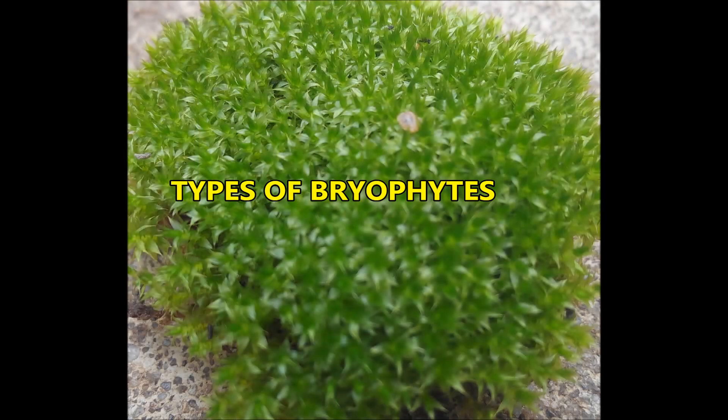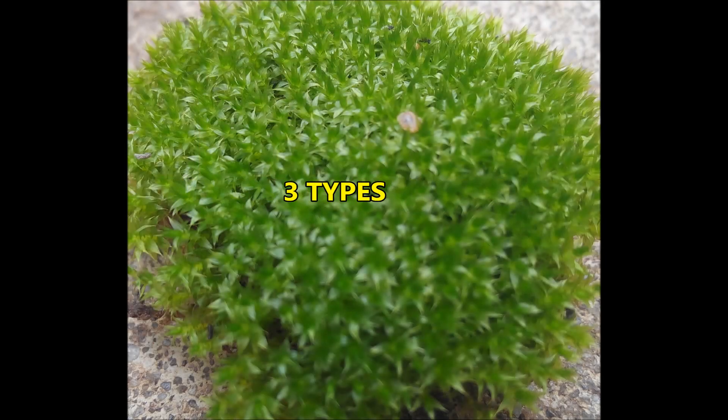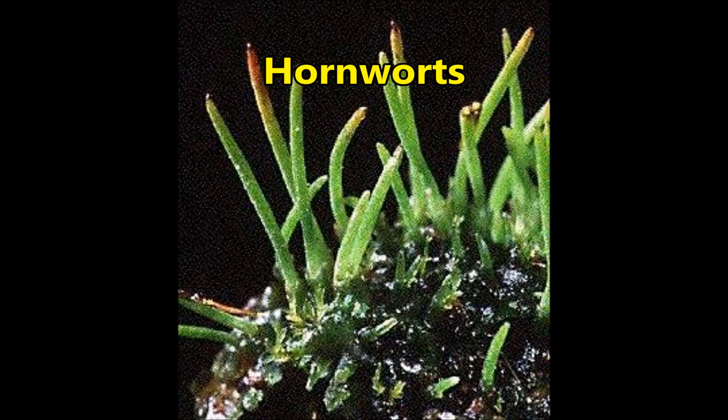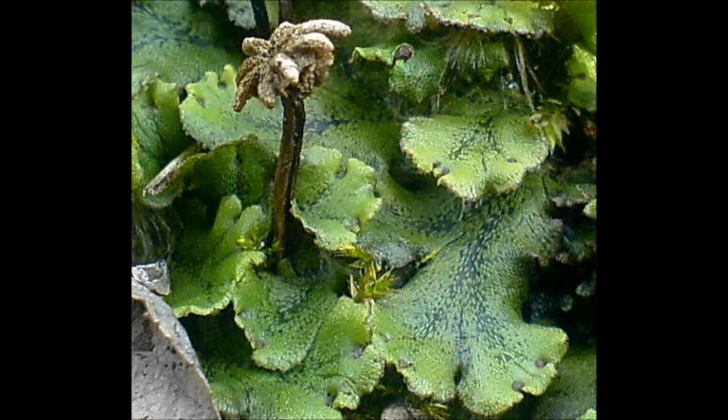Types of Bryophytes: There are three types of bryophytes — Mosses, Liverworts, and Hornworts. Liverworts have a small, less than 10 cm long thallus body.